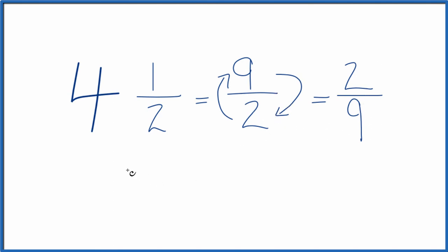We can check our work though. We can take that reciprocal at 2 over 9 and we can multiply it by our original fraction, that 9 over 2, which we know is equivalent to 4 and 1 half. We should get 1 if we did this correctly.